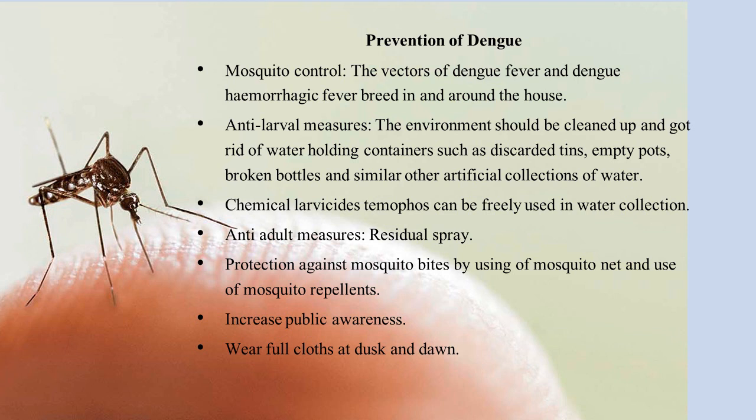Prevention of Dengue: mosquito control — the vectors of Dengue fever and Dengue hemorrhagic fever breed in and around the home. Anti-larval measures: the environment should be cleaned up and rid of water-holding containers such as discarded tins, empty pots, broken bottles, and other artificial collections of water.